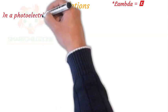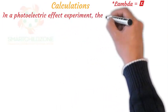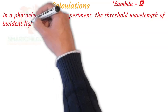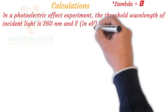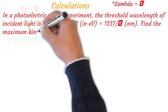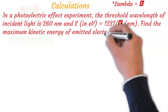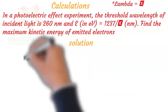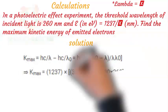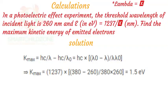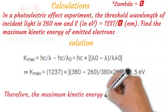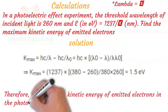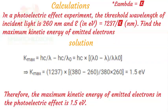For the sake of these calculations, lambda will be represented as X in a box. In a photoelectric effect experiment, the threshold wavelength of incident light is 260 nanometers, and E in electron volts equals 1237 over lambda in nanometers. Find the maximum kinetic energy of emitted electrons. Therefore, the maximum kinetic energy of emitted electrons in the photoelectric effect is 1.5 electron volts.